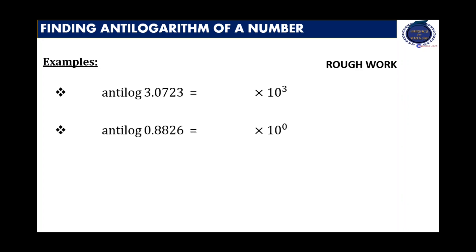Similarly, for the next number it is 10 to the power of 0, as the characteristic is equal to 0. And for the last one, it is equal to 10 to the power of minus 4, as the characteristic is bar 4. Bar 4 means it is negative. Remember that in every number given, the mantissa is always positive.